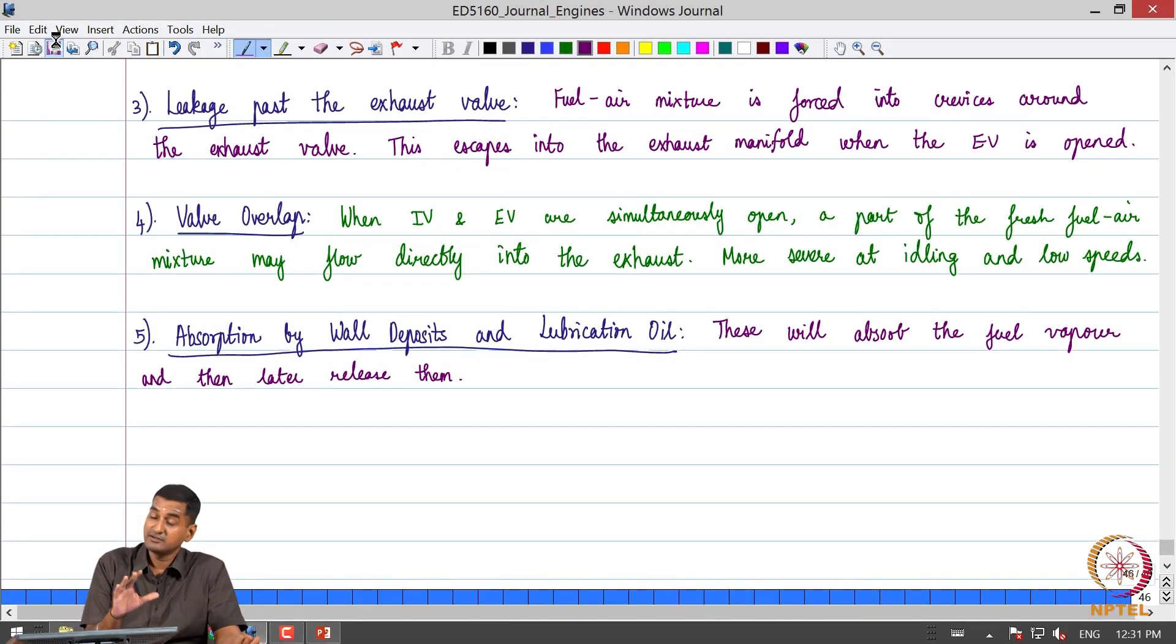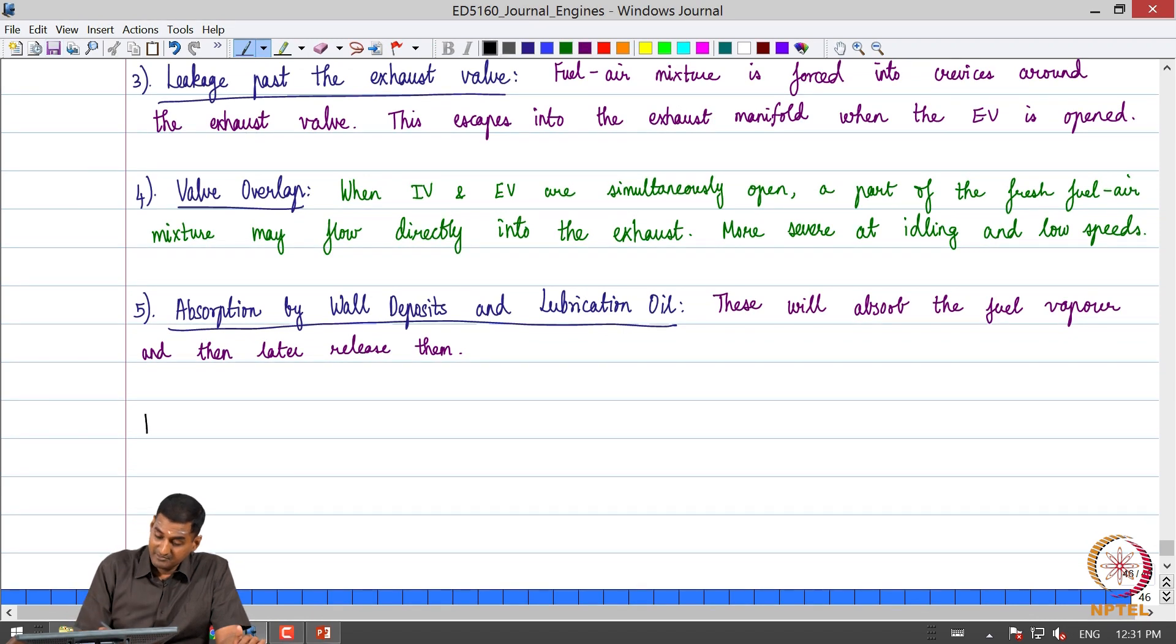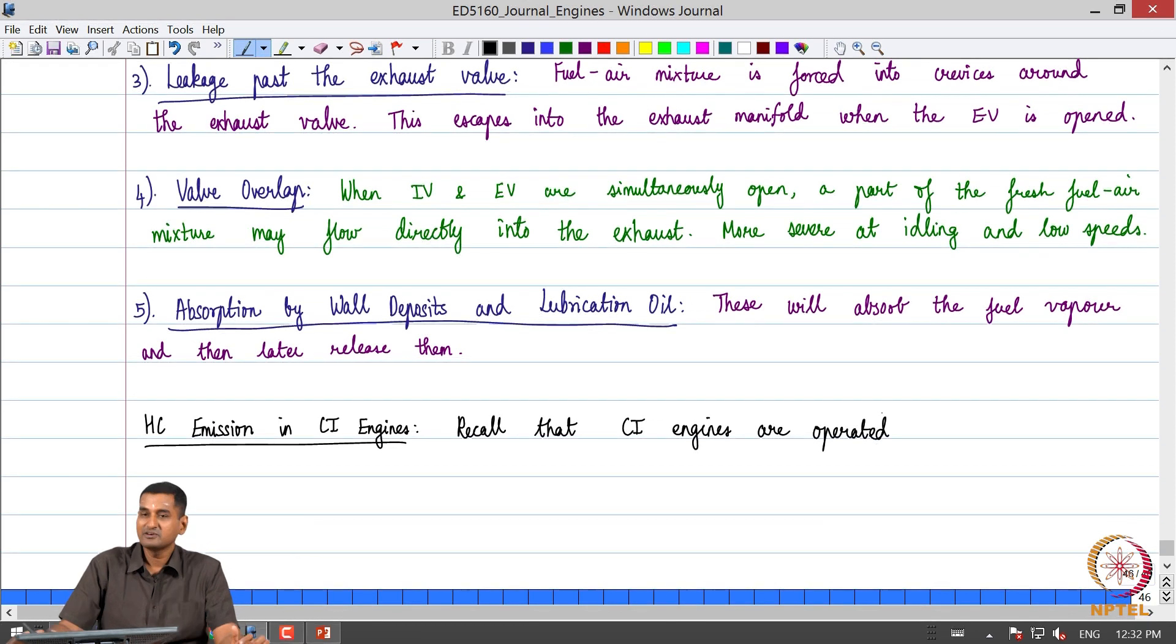These are the factors which are also common to CI engines, almost all of them. But in CI engines please note that the mixture itself is lean. If you recall from our discussion on the combustion process in compression ignition engines, recall that CI engines are operated with lean mixtures in the first place.